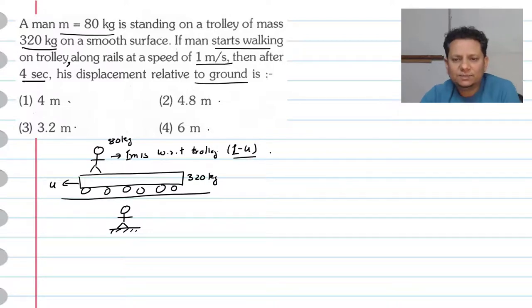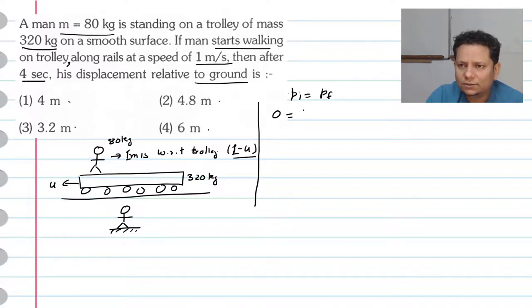So with respect to the inertial frame, this velocity will be 1 minus u. Now in this case if we conserve momentum, since the external force on the system is zero, initial momentum will be equal to final momentum. Initial momentum of the system is zero.